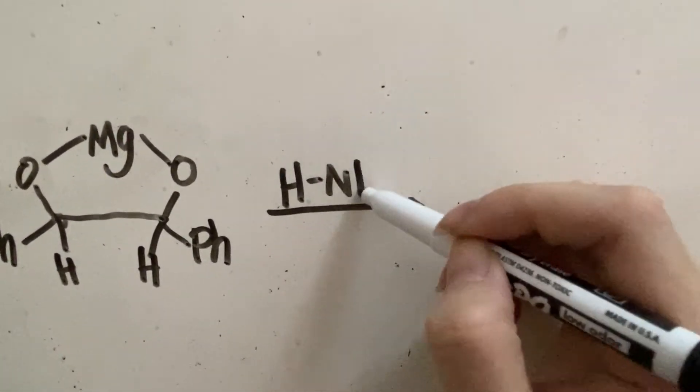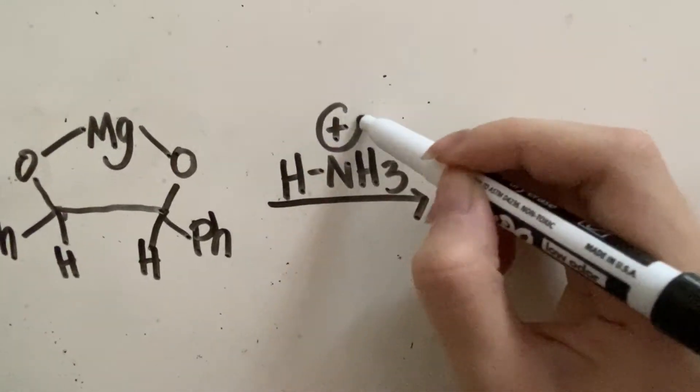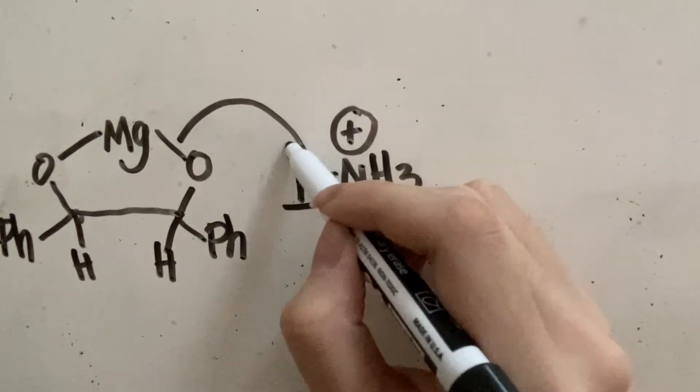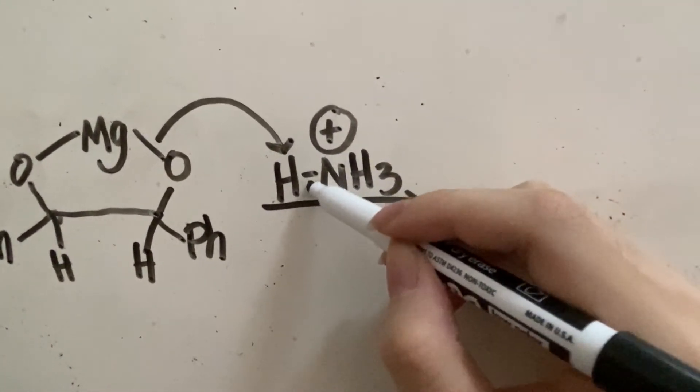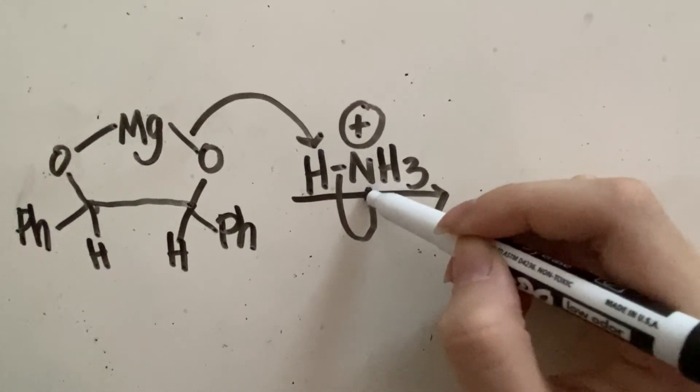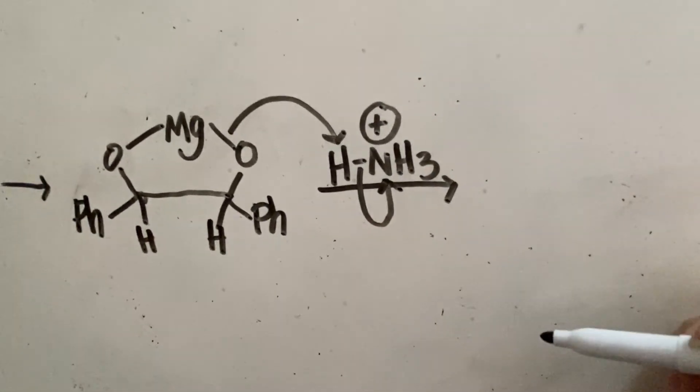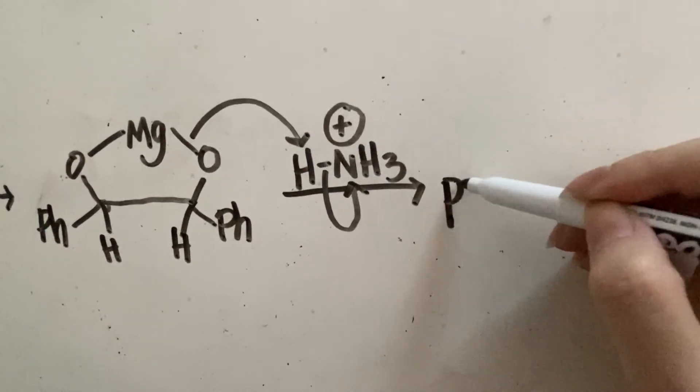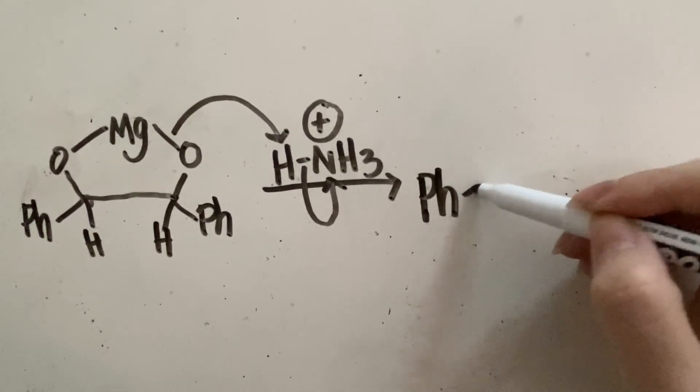Next, this reacts with NH4+. This bond breaks, and the oxygen forms a bond with the hydrogen from a proton donor. I'm using ammonium here, but hydronium also works for this reaction.